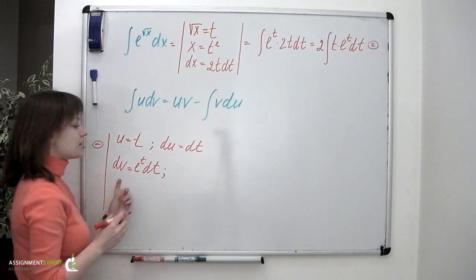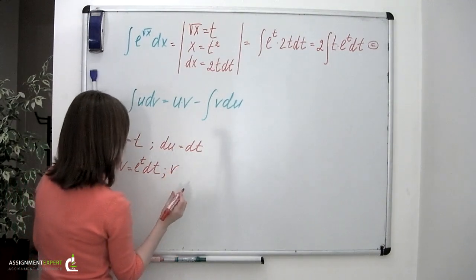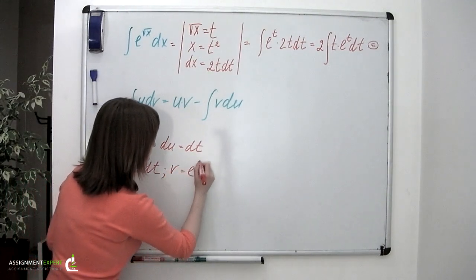To find v we're going to need to integrate both parts of this equation. So we'll have v equal to e to the t.